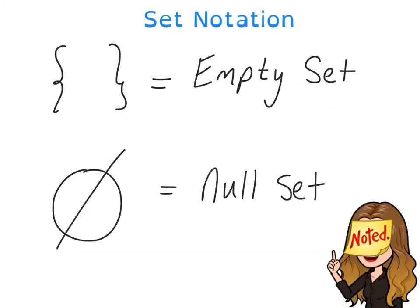And finally, for set notation, you have the empty set or the null set. And that basically means that there's nothing in the set. You don't say 0 because 0 could be considered an element of a set.